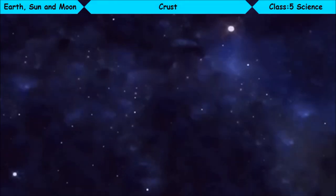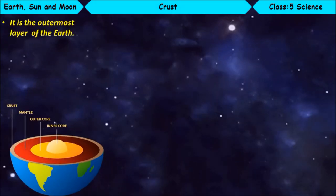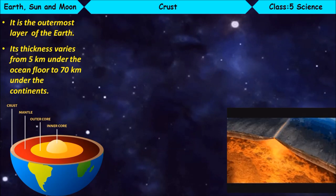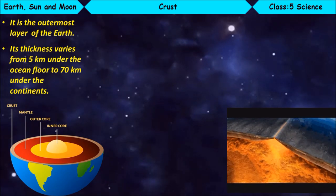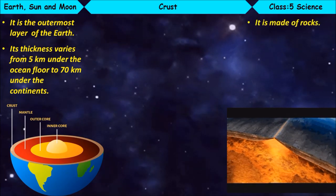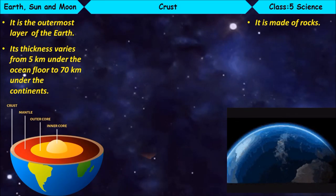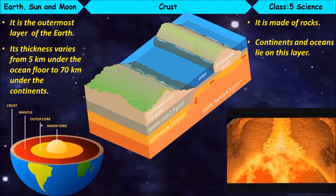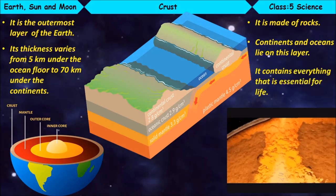Crust. It is the outermost layer of the Earth. Its thickness varies from 5 km under the ocean floor to 70 km under the continents. It is made of rocks. Continents and oceans lie on this layer. It contains everything that is essential for life.